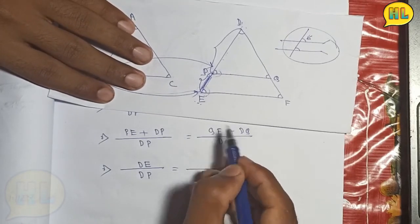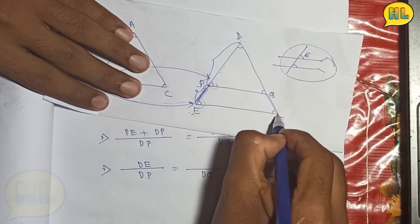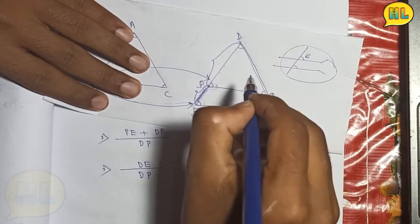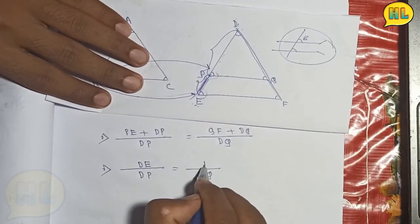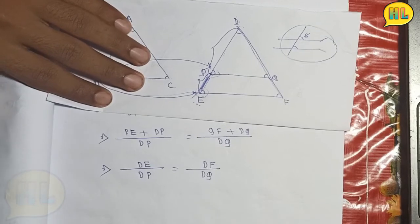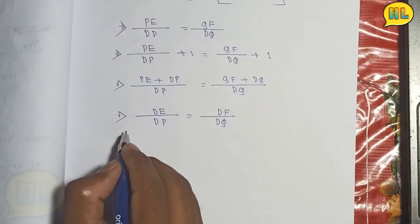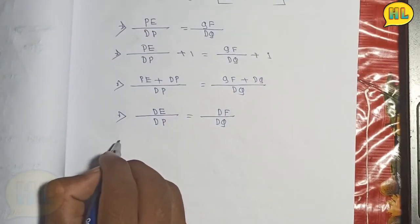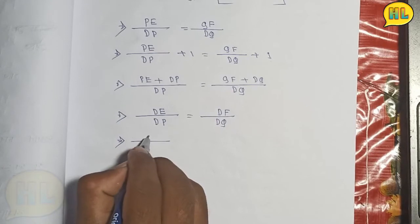QF plus DQ. QF is equal to DP and DQ is equal to DP. What is it? DF. So, this is the same location as you can see.